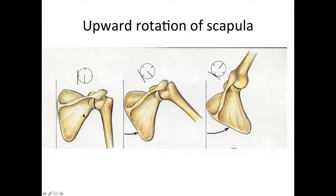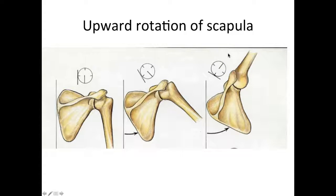Serratus anterior also allows upward rotation of the scapula. When you raise your arm to shoulder level, you get a collision between the greater tubercle of the humerus and the acromion, so we need to rotate the scapula upward to raise the arm above the head. When patients undergo a mastectomy and the surgeon accidentally severs the long thoracic nerve, cutting off supply to serratus anterior, the patient cannot lift their arm higher than shoulder level — enough to point out that surgeon in court.